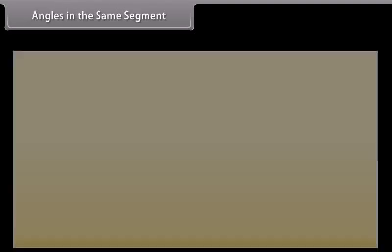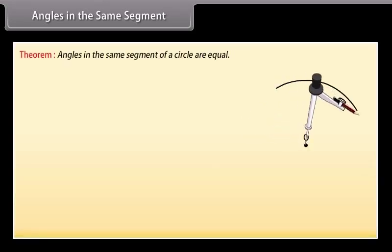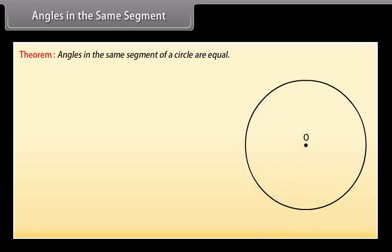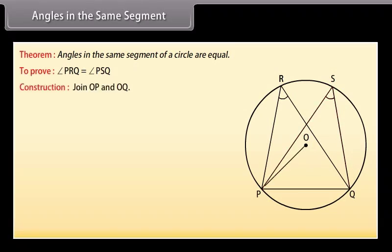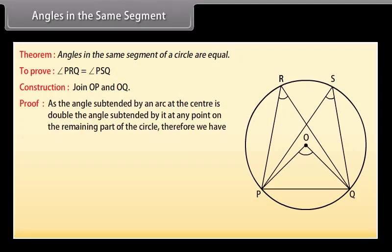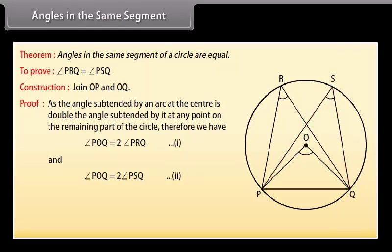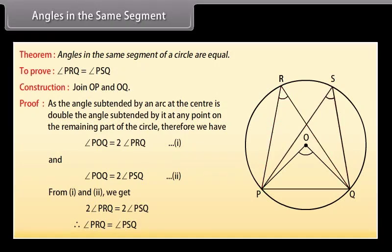Angles in the same segment. Theorem: angles in the same segment of a circle are equal. Given a circle with center O, and angles PRQ and PSQ in the same segment formed by chord PQ. To prove: angle PRQ equals angle PSQ. Construction: join OP and OQ. Since the angle subtended by an arc at the center is double the angle subtended at any point on the remaining part, angle POQ equals 2·angle PRQ and angle POQ equals 2·angle PSQ. From these two, 2·angle PRQ equals 2·angle PSQ, therefore angle PRQ equals angle PSQ.